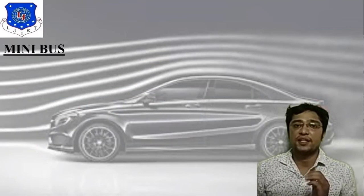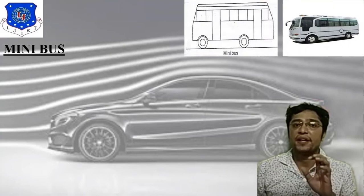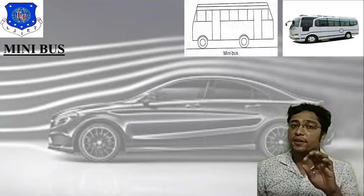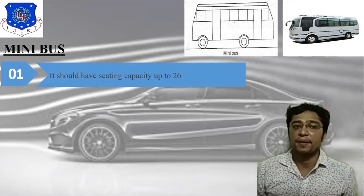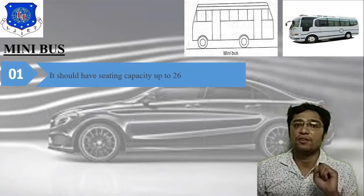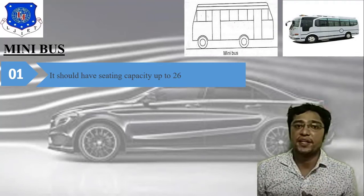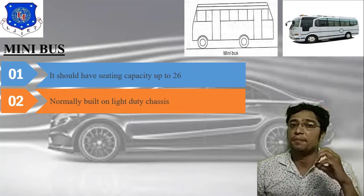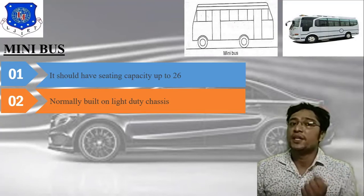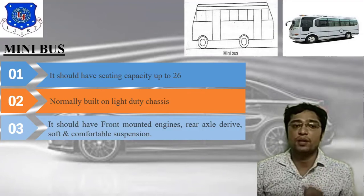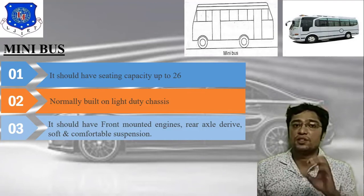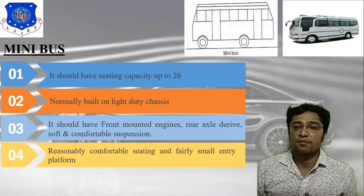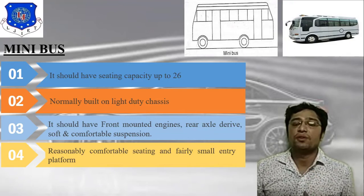The minibus has a seating capacity of up to 26 and is normally built on a light duty chassis. It features a front-mounted engine, rear axle drive, and soft and comfortable suspension. It also has reasonably comfortable seating and a fairly small entry platform. These are the key characteristics of a minibus.